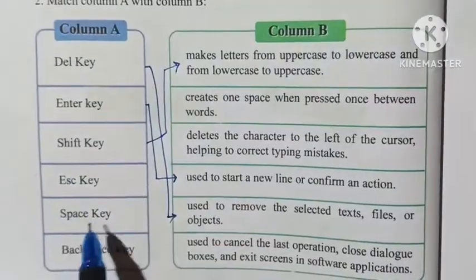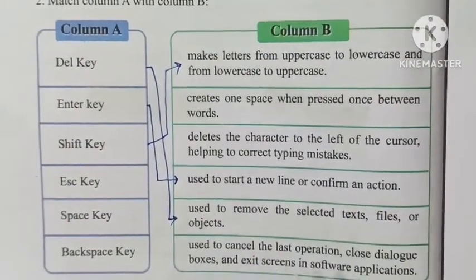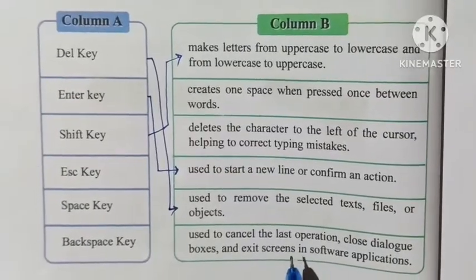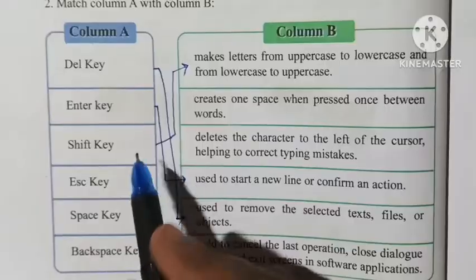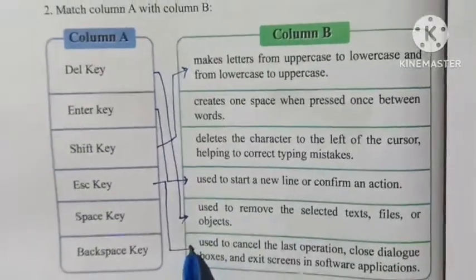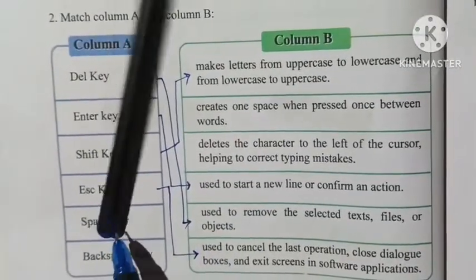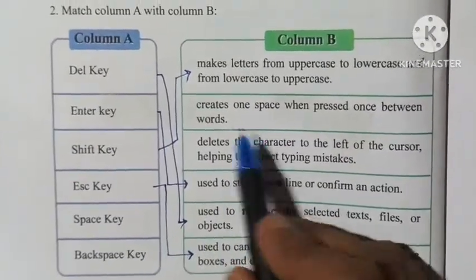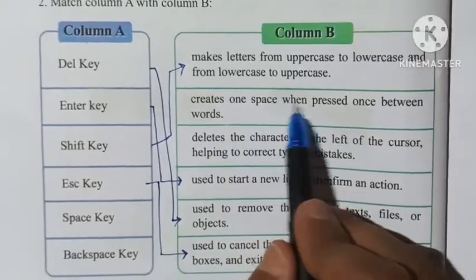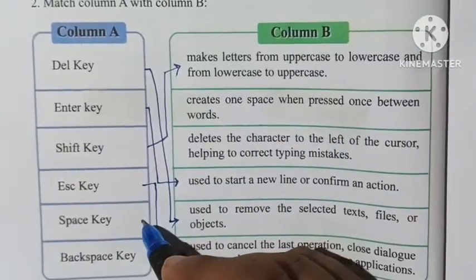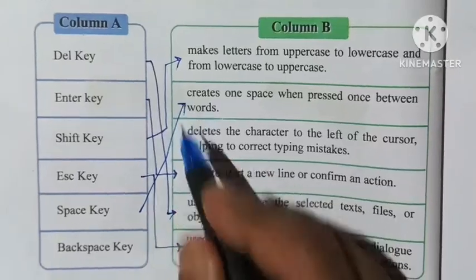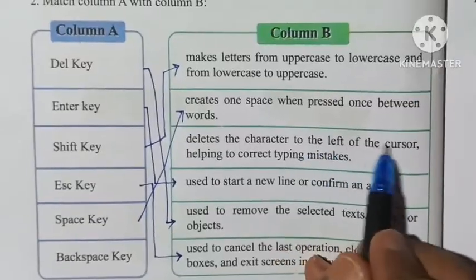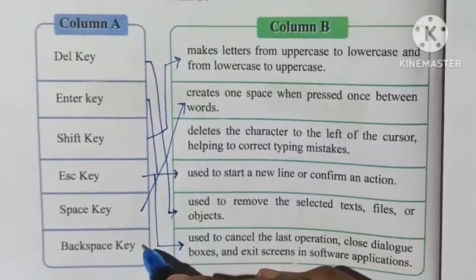The Escape key is used to cancel the last operation, close dialog boxes, and exit screens in software applications. The Space key is used to create one space between words when pressed once. The Backspace key is used to delete the character to the left of the cursor, helping to correct typing mistakes.